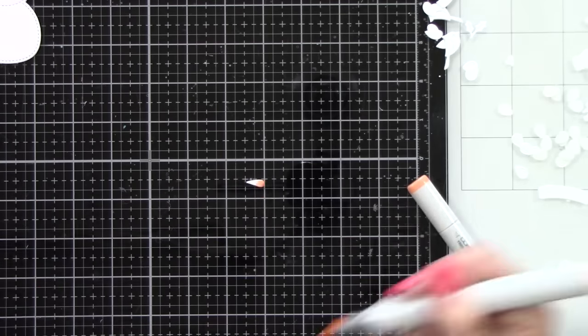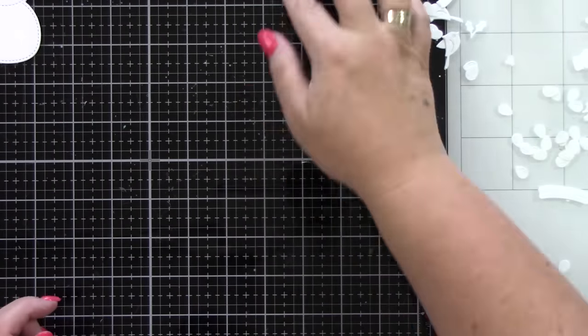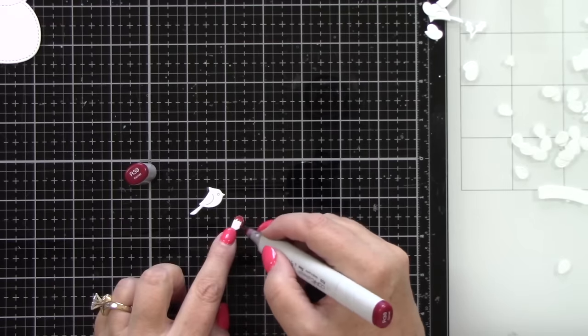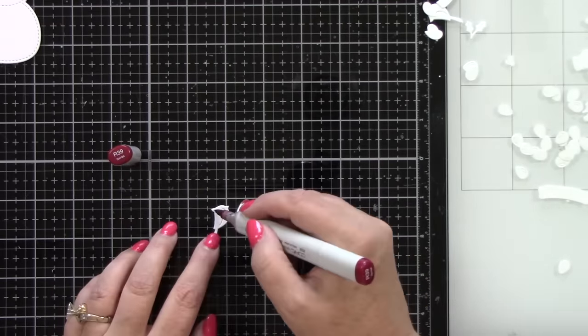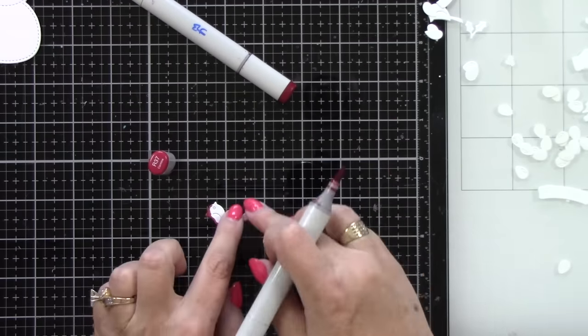You can see all of the Copic markers that I'm using here. Here's his cute little carrot nose. I colored his little arms. There's some birds. They're cardinals. I have die cut quite a few. I always tend to die cut extra and I'm going to color them obviously with some red.